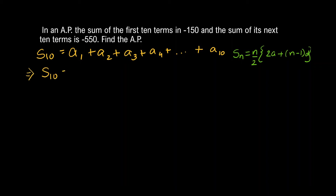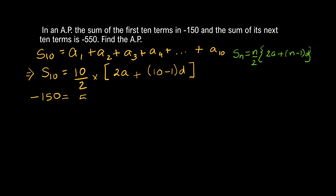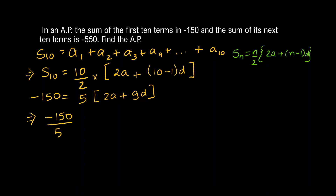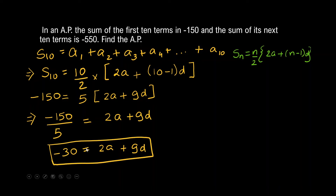For S10: substituting into the formula gives 10/2 × (2a + (10−1)d) = −150, which simplifies to 5 × (2a + 9d) = −150. Dividing both sides by 5 gives 2a + 9d = −30. Simplifying further: −150/5 = −30, so we get 2a + 9d = −30. We name this Equation 1. Since there are two variables, a and d, we need two equations to solve them.